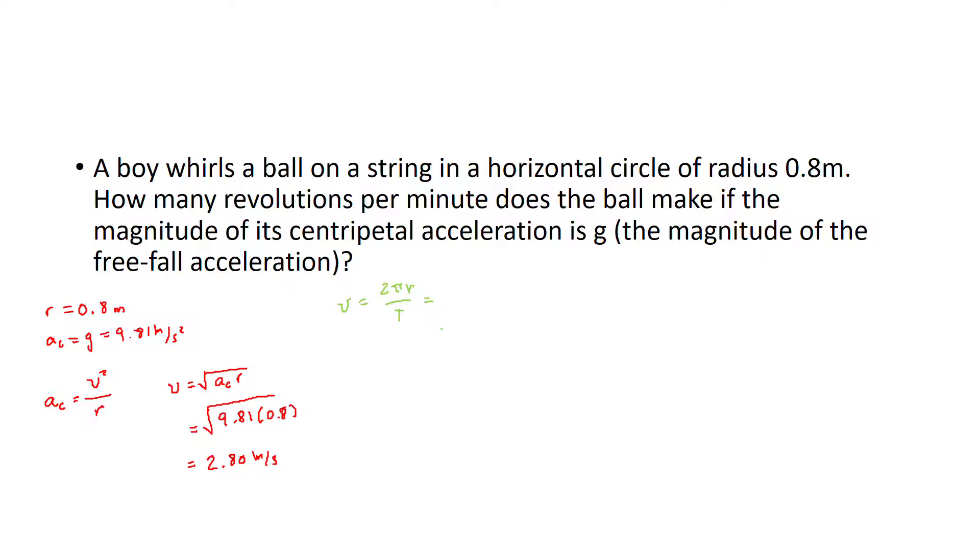It's 2 pi r times the frequency, and whenever we're asked revolutions per minute, that's a frequency. So we can solve for f. This will be f equals velocity over 2 pi r.